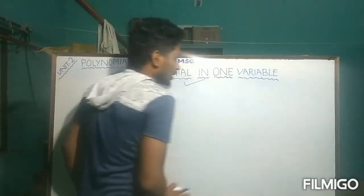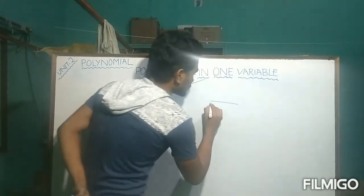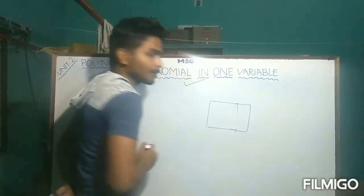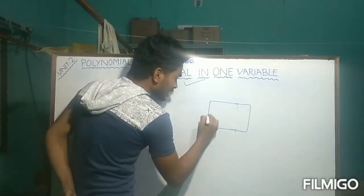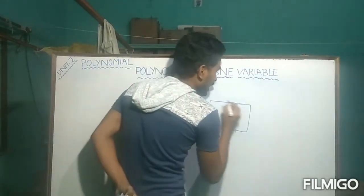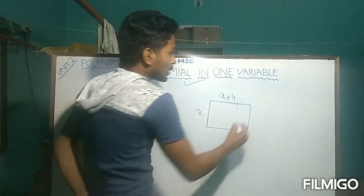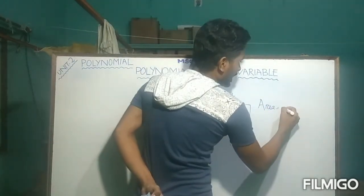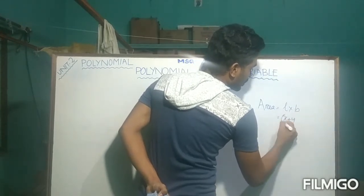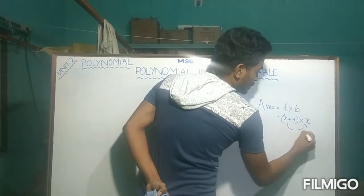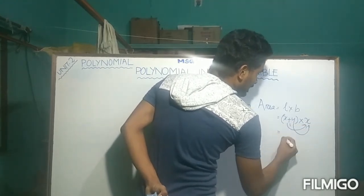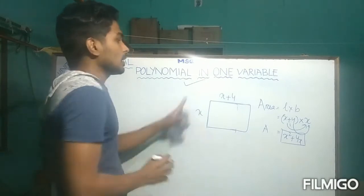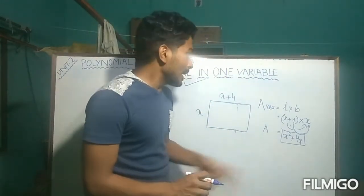So, what is a polynomial in one variable? Let us take an example. Suppose we have a rectangle. If its breadth is X and its length is X plus 4, what will be its area? Area of rectangle is length into breadth, that is (X+4) × X. Using the distributive law, we get X² + 4X. Hence, the area of the rectangle is X² + 4X. It has two terms.